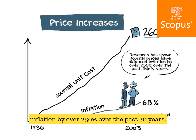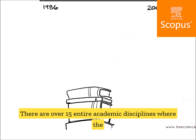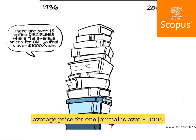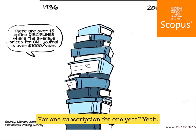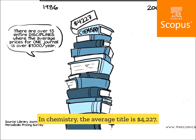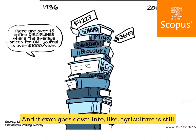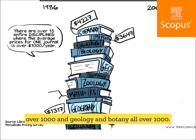Research has shown that journal prices have actually outpaced inflation by over 250 percent over the past 30 years. There are over 15 entire academic disciplines where the average price for one journal is over a thousand dollars per year. In chemistry, the average title is $4,227; in physics, $3,649. It even extends to agriculture, geology, and botany — all over a thousand — and those are just the averages.